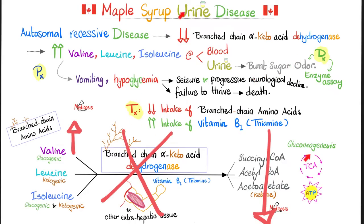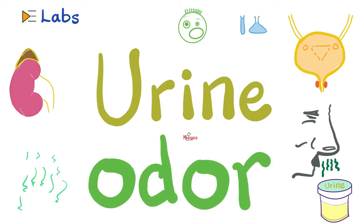To manage these patients, decrease intake of the three branched-chain amino acids: valine, leucine, and isoleucine. And in case there is a little enzyme activity remaining, give the co-enzyme to help it — so increase the intake of thiamine, which is vitamin B1.